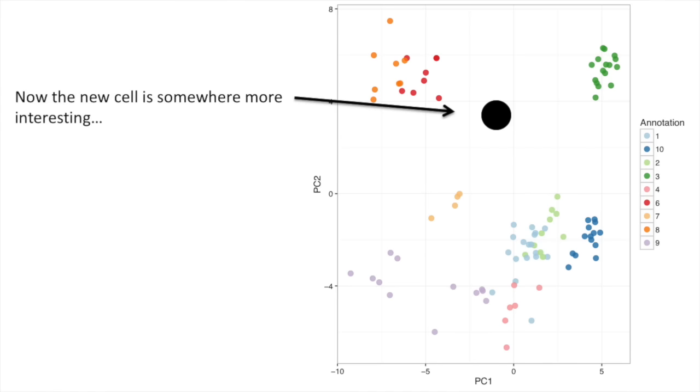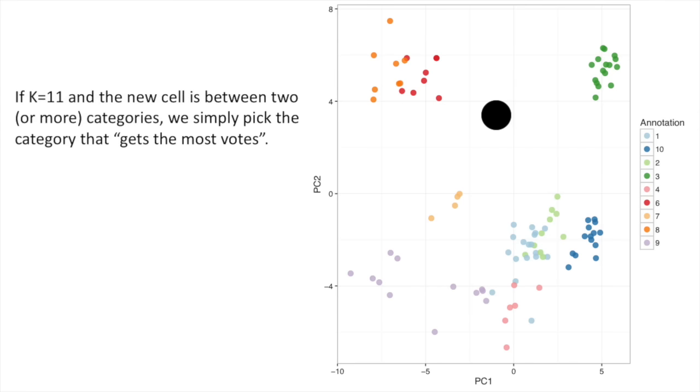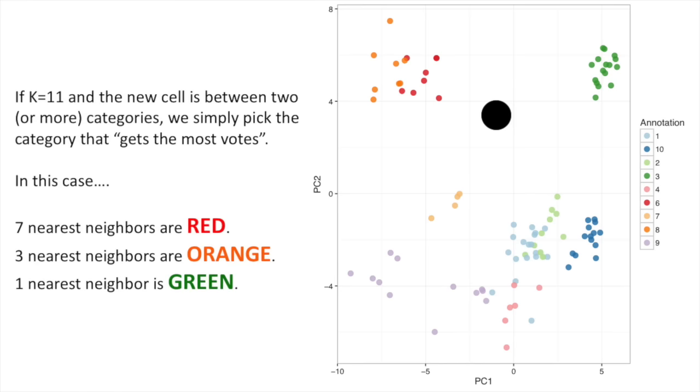Now the new cell is somewhere more interesting. It's about halfway between the green and the red cells. If K equals 11 and the new cell is between two or more categories, we simply pick the category that gets the most votes. In this case, seven nearest neighbors are red. Three nearest neighbors are orange. One nearest neighbor is green. Since red got the most votes, the final assignment is red.